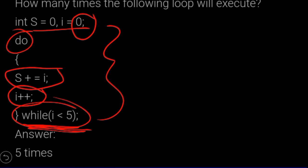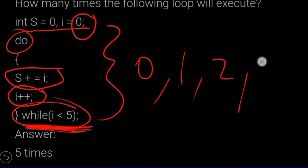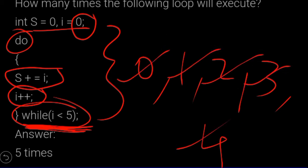The while condition is i less than or equal to 5. Starting at i equals 0, we increment: 0, 1, 2, 3, 4. When i reaches 5, the condition is false and the loop exits. So i values go from 0 to 4, giving us 5 iterations. The loop executes 5 times.